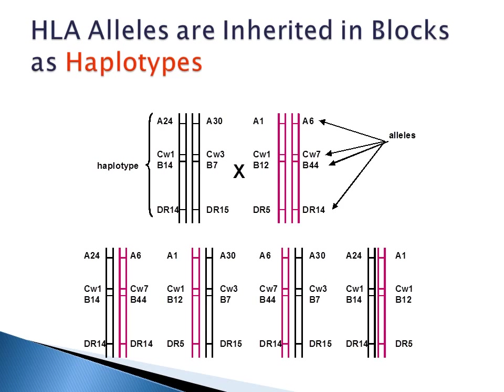A haplotype is the combination of alleles that are inherited together, so the parental genotypes on the top can produce four possible genotypes in the offspring shown at the bottom of this slide.